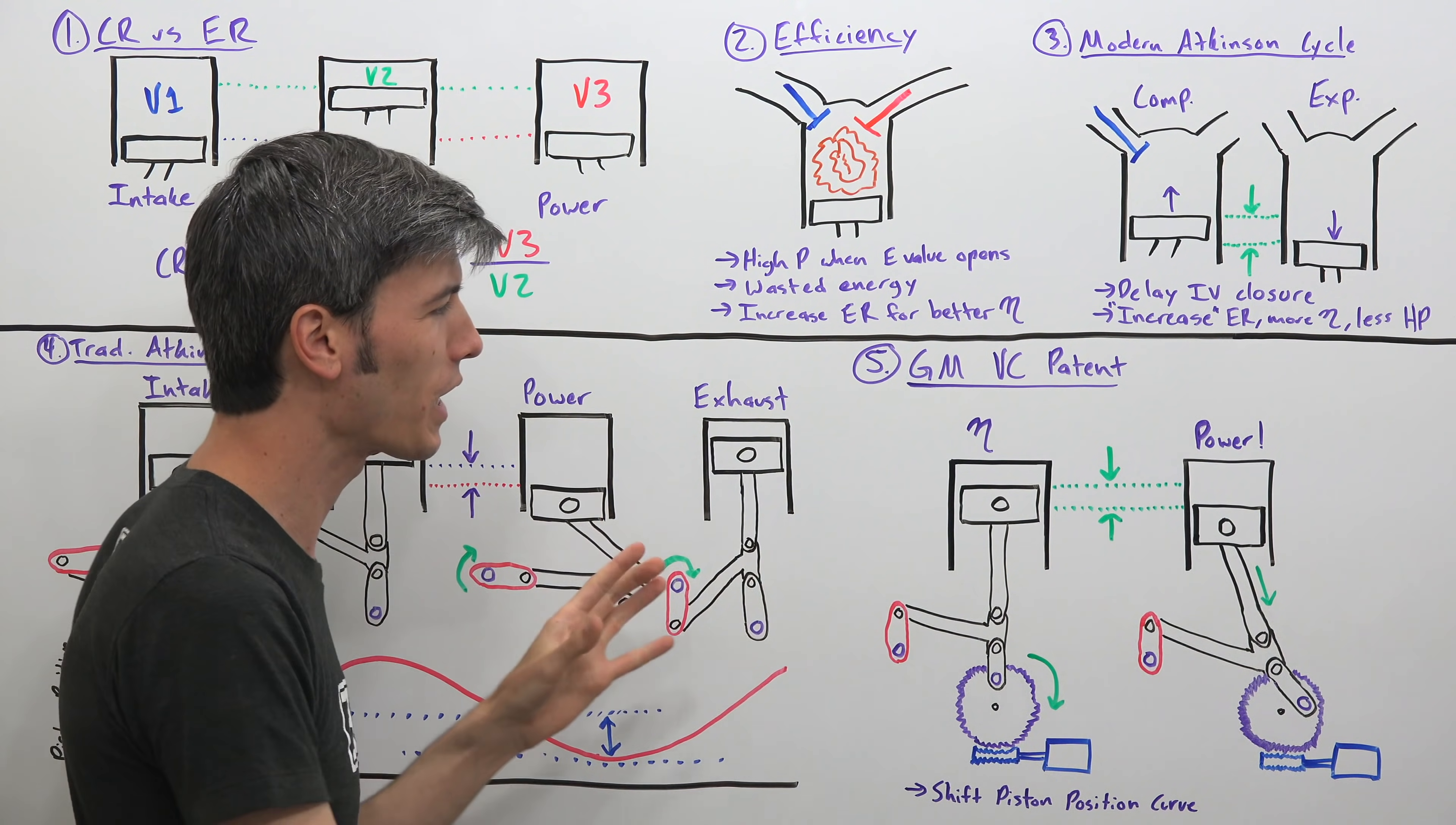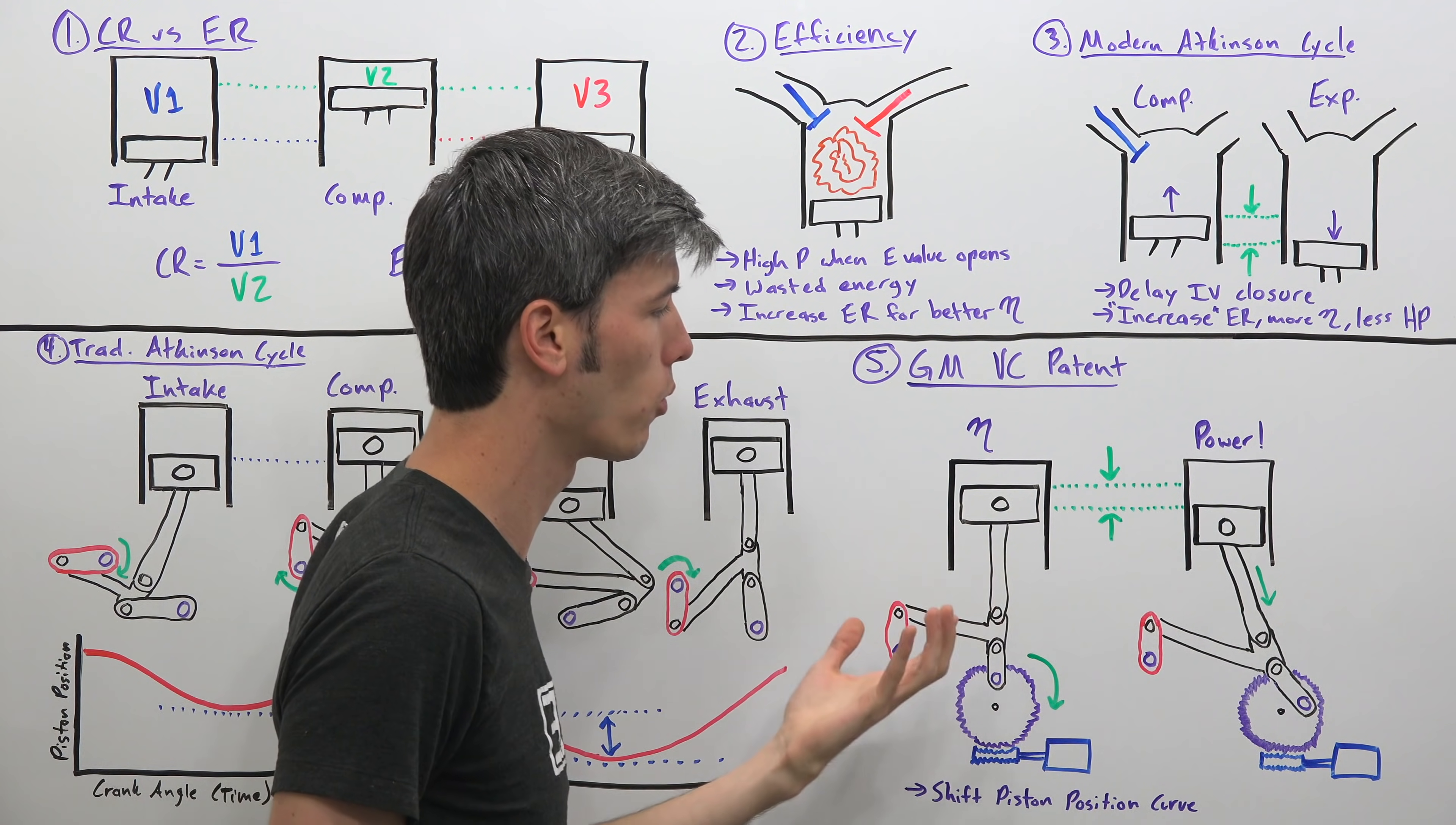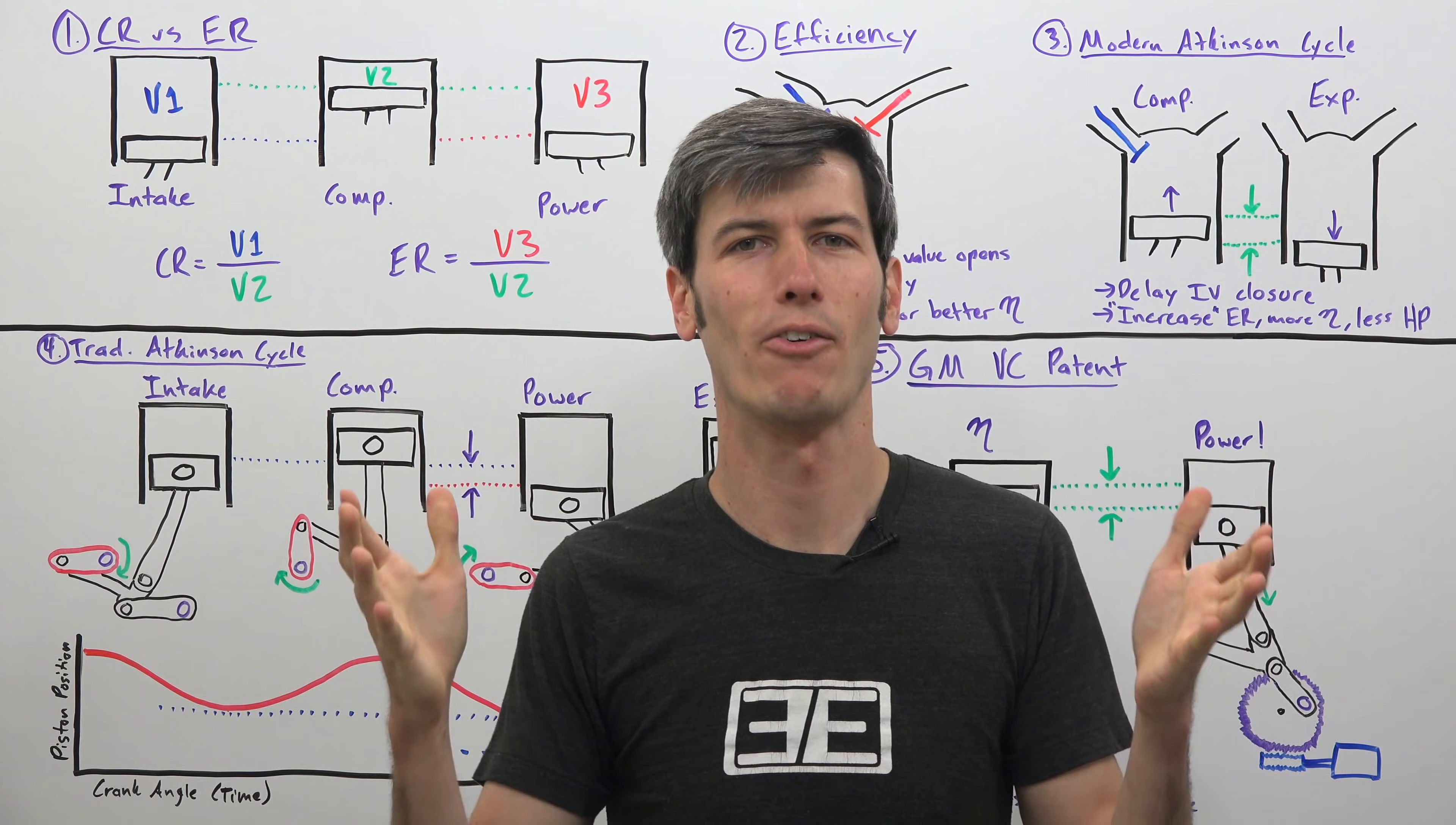And again, when you're looking at a patent, don't just assume that this is exactly what it's going to look like. Patents are kind of going to be the simplified version. They will probably have a different system of linkages and how it would actually be put into production if it ever is put into production, rather than looking exactly like this. But this gives the general idea of how that engine style would actually work. Now again, a big thank you to Skillshare for sponsoring this video.